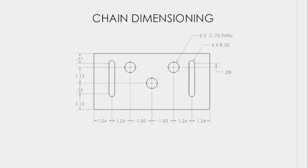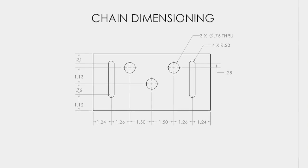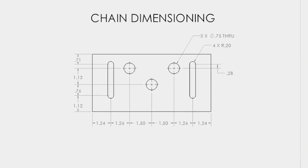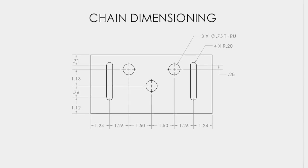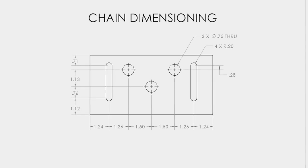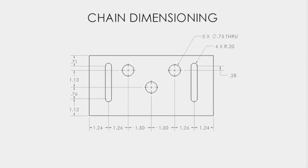Chain dimensioning is used when it is important that two features are located a certain distance from each other. Two holes may need to be a certain distance from each other in order to mate up with two fixed pins, for example.